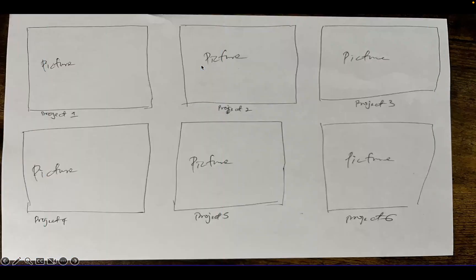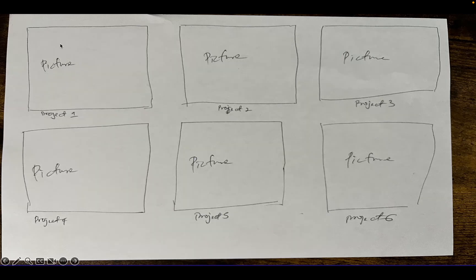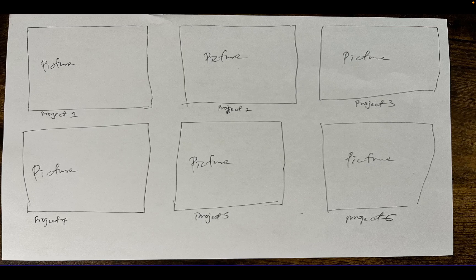I did my own sketch — don't mind my drawing, I did it very fast. I want to display six projects on my page, three for each row. For each box I'll put an image, then under it the name of the project. So: picture, picture, picture, project name, project name, project name. This sketch will guide me on how to write my code.